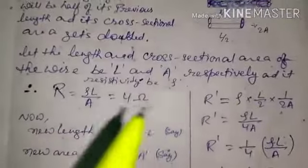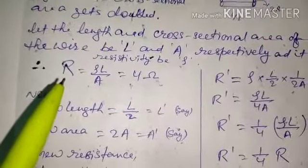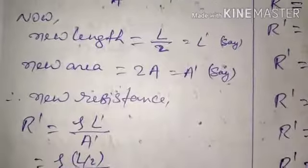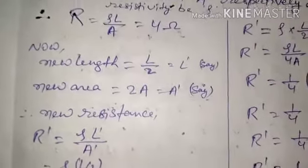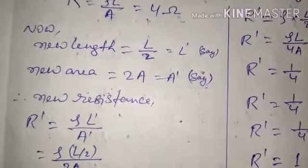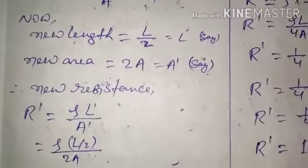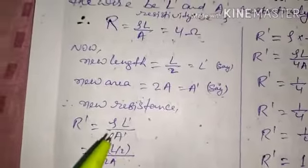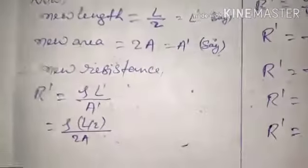Let us assume the original length and cross-sectional area of the conductor are L and A respectively, and its resistivity as ρ. Using R = ρL/A, the original resistance equals 4 ohm. The new length is L' = L/2 and the new area is A' = 2A. Therefore the new resistance R' = ρL'/A', and we substitute the values of L' and A'.